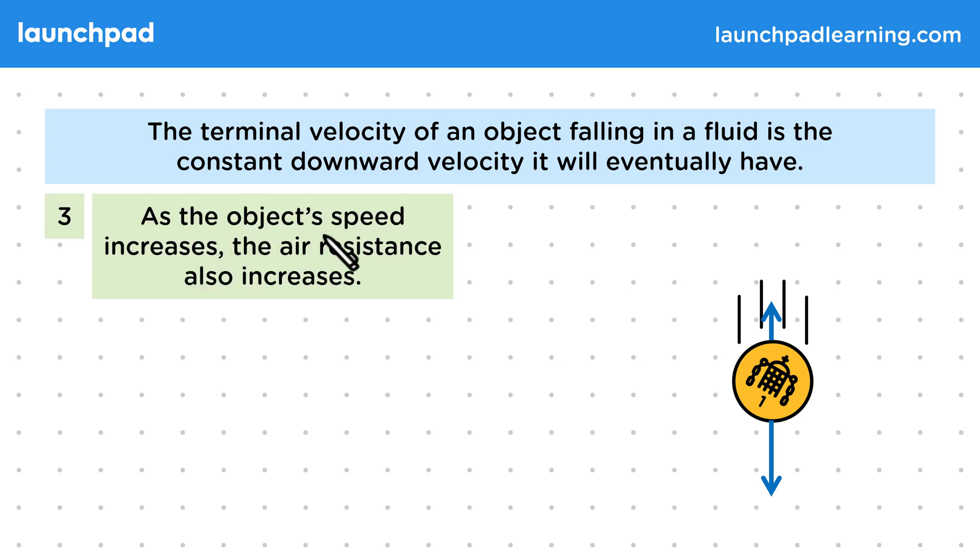As the object's speed increases, the air resistance also increases. Weight is currently stronger than air resistance, so the resultant force is directed downwards. So the object is still accelerating downwards and increasing its speed.